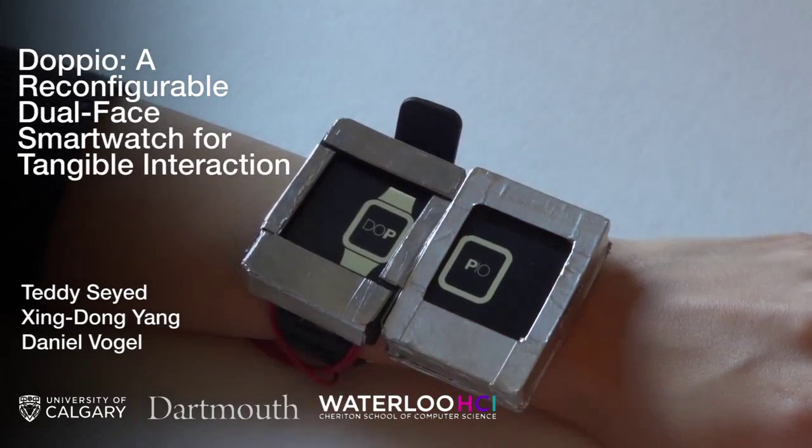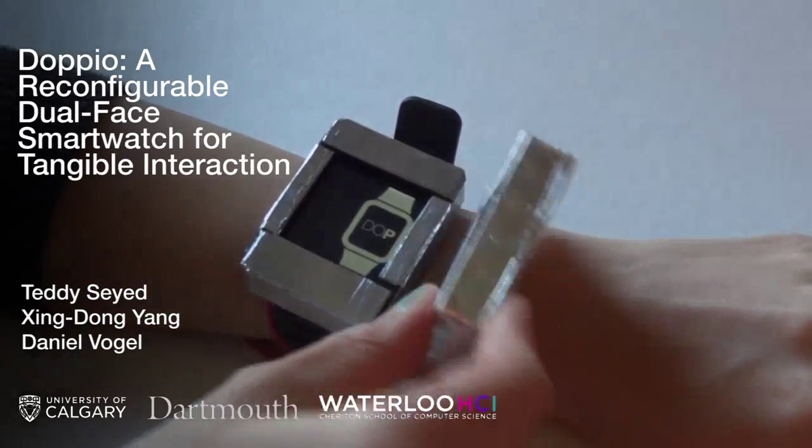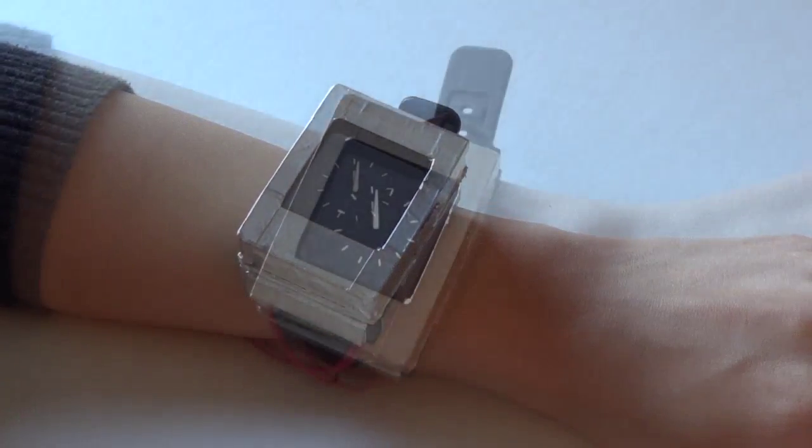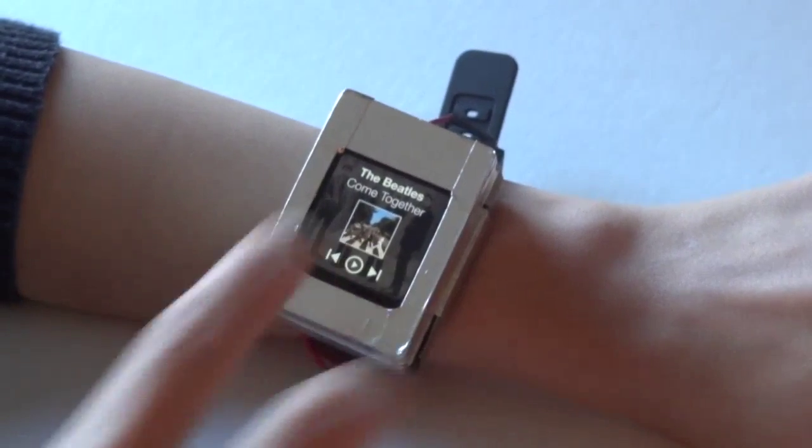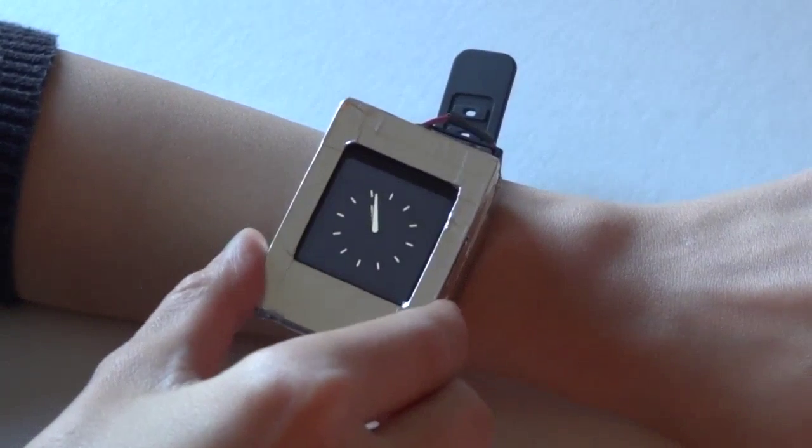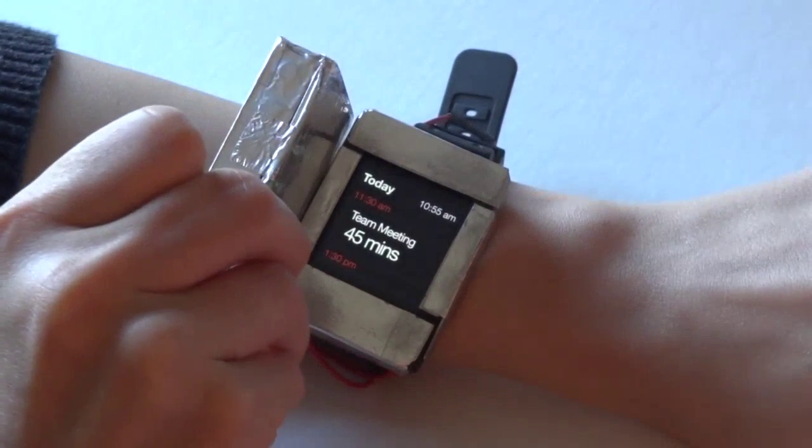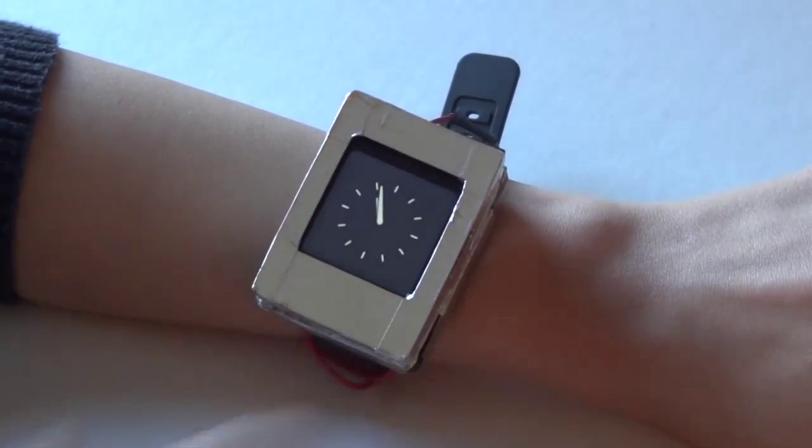This is Doppio, a dual display smartwatch that is tangible and reconfigurable. With Doppio, we enhance smartwatch interactions, making it very easy to do common watch-based tasks, like switch between different applications and look at notifications.